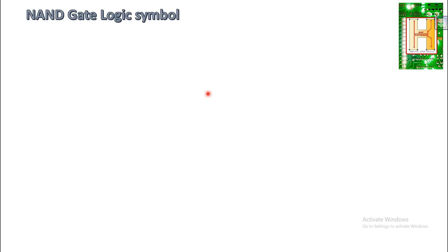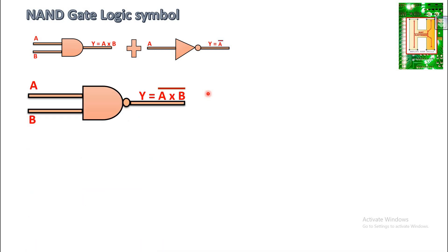Now let us talk about the NAND gate. The NAND gate is a combination of AND gate and NOT gate. A and B are the inputs. The AND gate output feeds into a NOT gate, indicated by the bubble. The output of the AND gate is Y equal to A into B, and since NOT is present, the final output becomes Y equal to the complement of A into B.